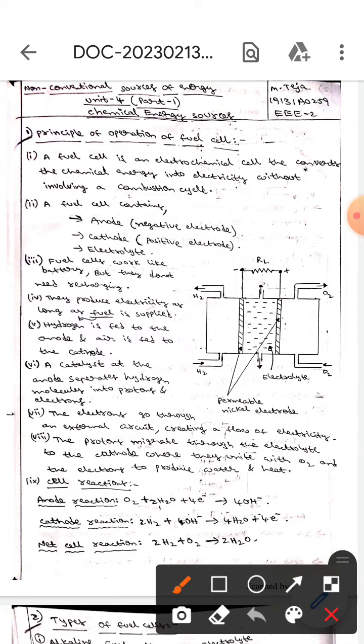A fuel cell is an electrochemical cell which converts the chemical energy into electrical energy without involving a combustion cycle. A fuel cell contains anode, which means negative electrode, whereas positive electrode is cathode, and the next one is electrolyte.